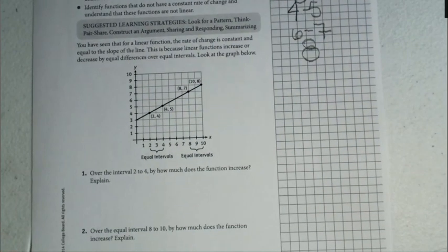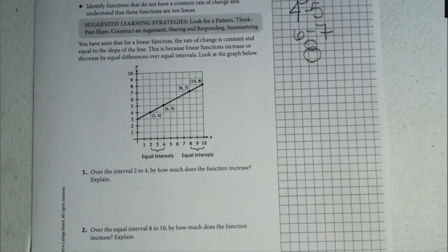Let's go ahead and take a look at the introduction to number one and two. You have seen that for a linear function the rate of change is constant and equal to the slope of the line. This is because linear functions increase or decrease by equal differences over equal intervals. Look at the graph below.